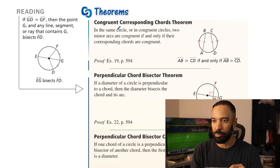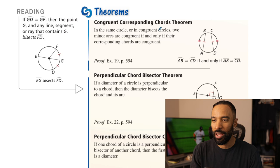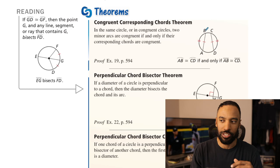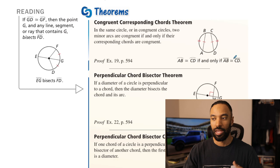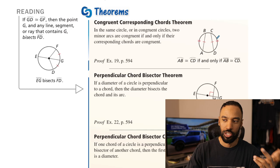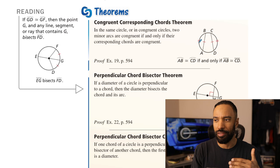We have some theorems. The Congruent Corresponding Chords Theorem states: in the same circle, or in congruent circles, two minor arcs are congruent if and only if their corresponding chords are congruent. So there's a segment AB which is a chord, and there's an arc AB; there's a segment CD which is a chord, and there's an arc CD. If those chords are congruent, so are the arcs. There's also a converse: two arcs are congruent if their chords are congruent.